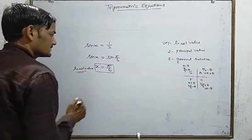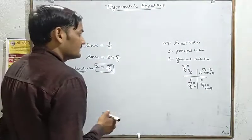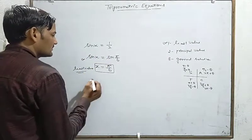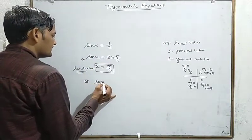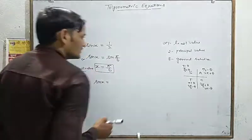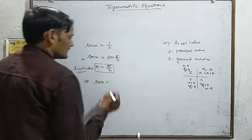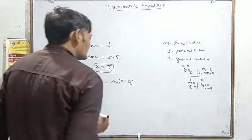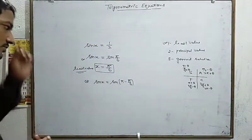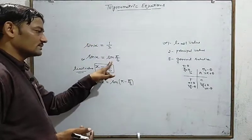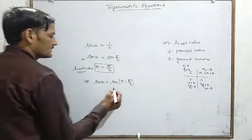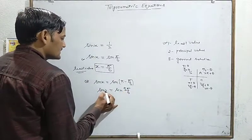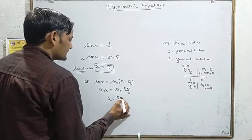So the least value coming out here is pi/6. If we calculate more values — suppose pi/6 gives us 1/2 — then sin is also positive in the second quadrant. Since sin(pi - theta) = sin(theta), if we subtract pi/6 from pi, the value becomes 5pi/6. So one more value of sin is also coming from here: 5pi/6.